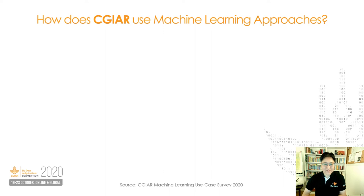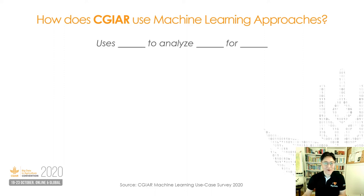We recently ran an online survey to collect CGR's machine learning use cases, where we asked to complete this sentence: what kinds of analytical methods they use, to analyze what kinds of data, for what purposes.